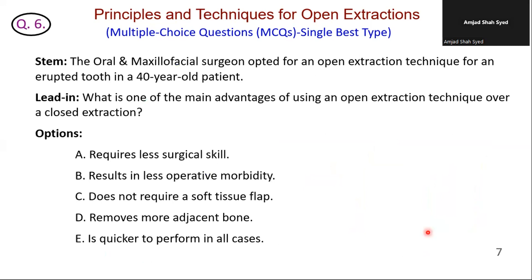An oral and maxillofacial surgeon opted for an open extraction technique for an erupted tooth in a 40-year-old patient. What is one of the main advantages of open extraction over closed extraction? Option A is incorrect — open extraction often requires more surgical skill due to flap reflection and bone removal. Option B is correct — open extraction can cause less operative morbidity compared to closed extraction. Option C is incorrect — open extraction typically requires reflecting a soft tissue flap. Option D: open extractions aim to minimize removal of adjacent bone. Option E: open extraction can be quicker in some cases but this is not guaranteed. The correct answer is B — the open extraction technique can cause less operative morbidity compared to closed extraction, which may result in significant bone loss and other complications.